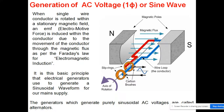You can see the slip rings here, the carbon brushes, and this we call the coil — or conductor, or wire loop. Its rotation is given in this way, and you can see the axis of rotation here.